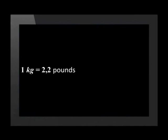It is important to be able to convert between these two measuring systems. For example, one kilogram is equal to 2,2 pounds or one inch equals 2,54 centimeters. Let us look at some examples of converting imperial measurements to metric units.